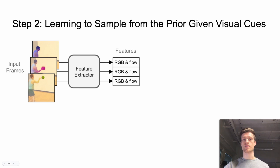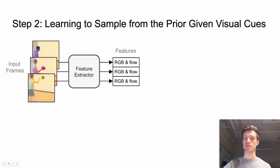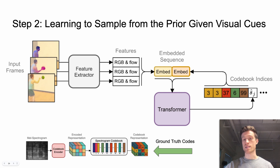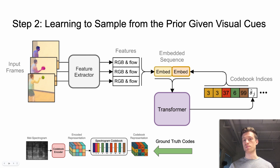In the second step, we train an autoregressive model to sample from the codebook. To make generated samples relevant to the visual information, we prime the sampling with a set of video frame features. The autoregressive model is trained to predict the next codebook index, given the visual features and previously generated ground truth codebook codes. As the ground truth codes, we use the encoding of the original spectrogram. We use GPT-2 with 24 layers as the autoregressive model. Both steps can be trained on one consumer-type GPU.